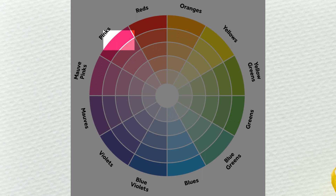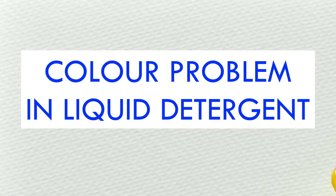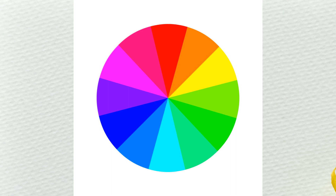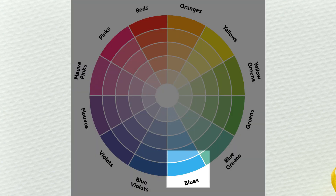Now let's apply this to liquid detergent. Our problem is we are adding blue color but getting green color. We will get pure blue color only if the liquid detergent is free from any other colors. If the liquid detergent already has some other color, that color will interact with the added blue and produce a new color. Based on this fact, by referring to the color wheel, we can identify the suspicious color already present in our liquid detergent.